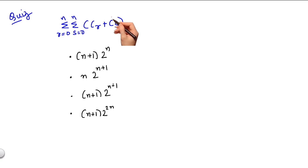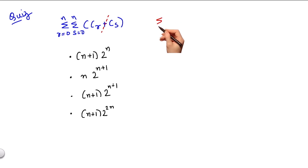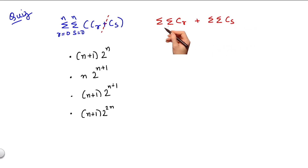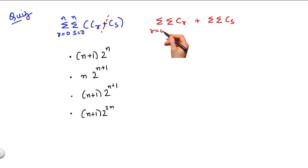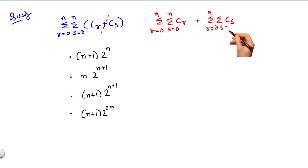To solve this, I can break this summation across the plus sign to get two double summations: the first one being double summation Cr, plus double summation Cs, both with the same limits — r from 0 to n and s from 0 to n.